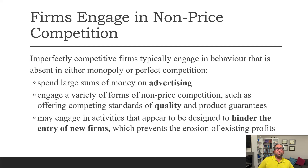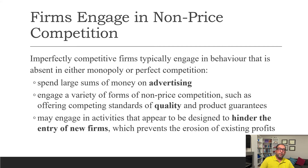Advertisement is purely related to monopolistic competition and imperfect competition. In perfectly competitive markets, there is no advertisement — you never see a farmer advertising their meat or produce. Imperfectly competitive firms also engage in non-price competition such as offering quality standards and product guarantees. They may also engage in activities designed to hinder the entry of new firms, so that their business is not taken away by new entrants.